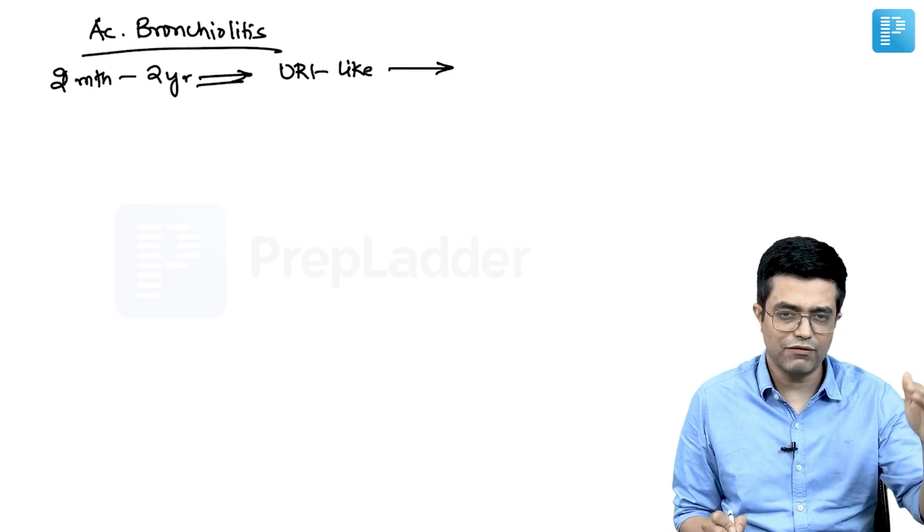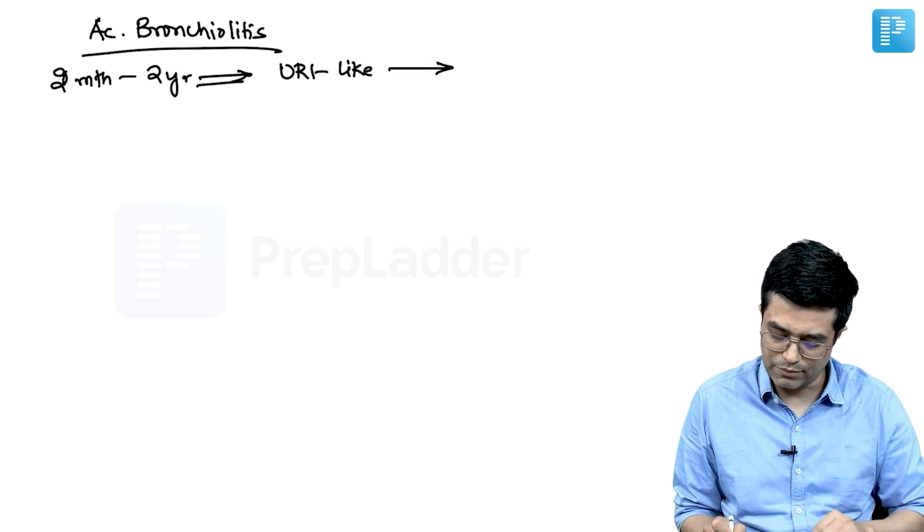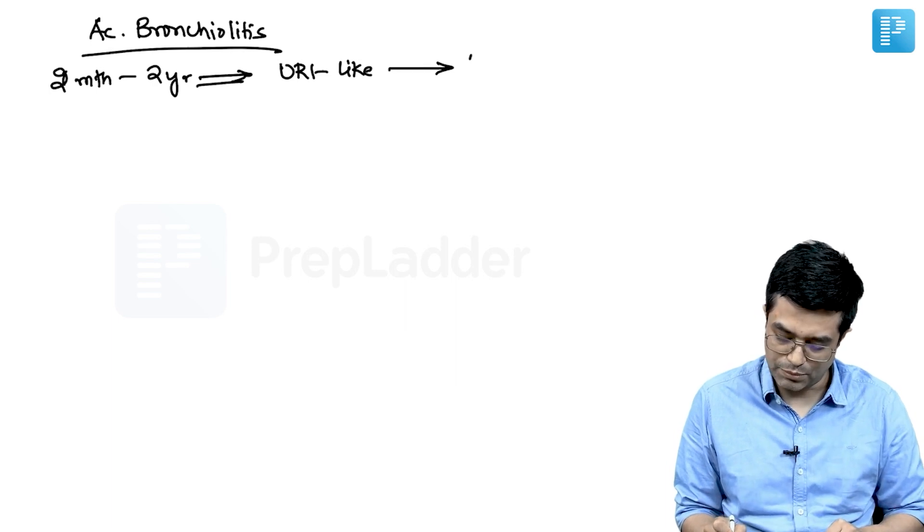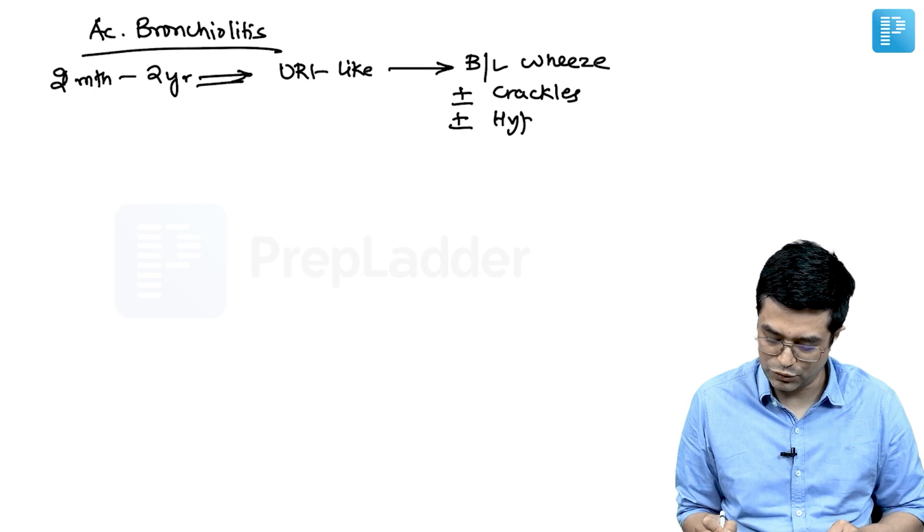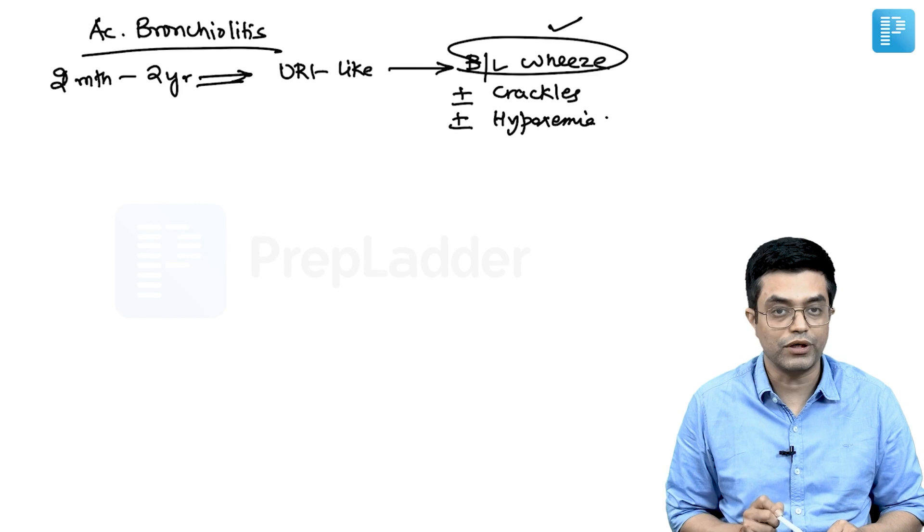There will be fever and coryza for a couple of days followed by development of bilateral wheezing with or without crackles, with or without hypoxemia. Hypoxemia and crackles are variable but bilateral wheeze will be strongly present.